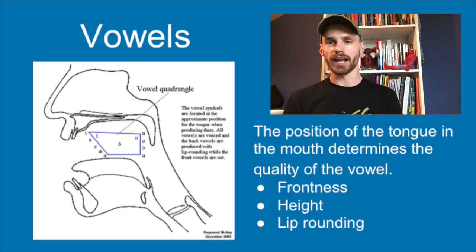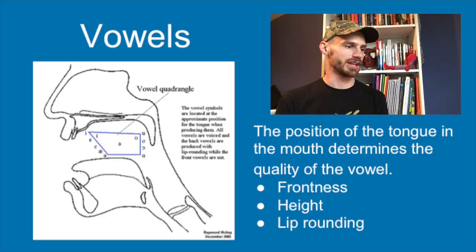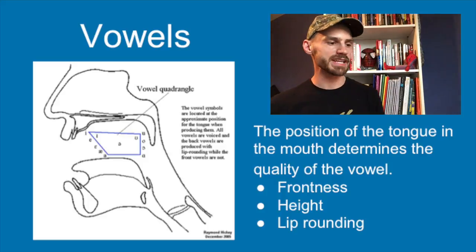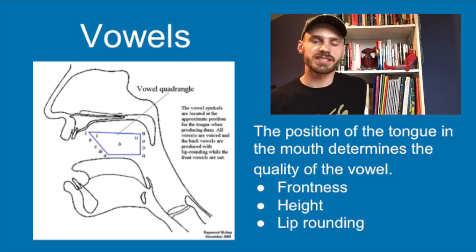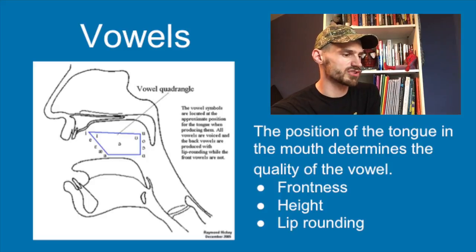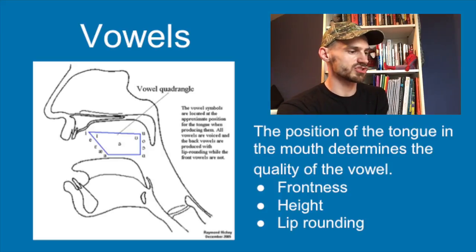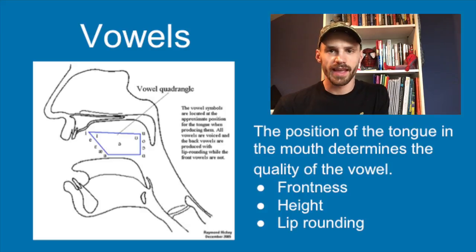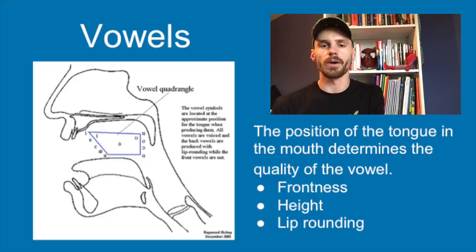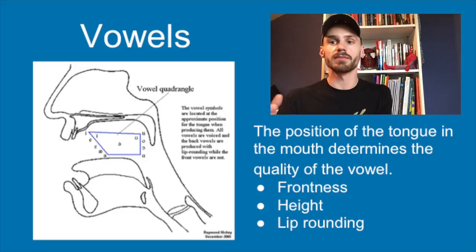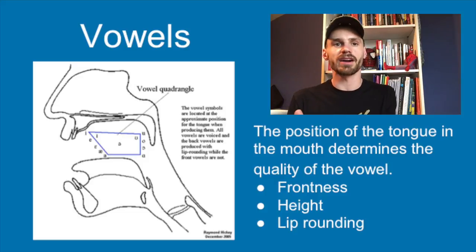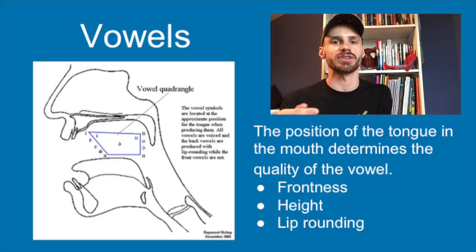We've mainly been talking about consonants so far. Now I want to talk about vowels. Vowels can also be described using just three criteria: frontness, height, and lip rounding. In this sagittal view of the mouth, there's a quadrilateral in the middle of the mouth that corresponds to the position of the tongue when producing vowels. With consonants you have some obstruction or constriction to the airflow, but with vowels they're much more open and free — it's only a matter of where your tongue is located in your mouth that shapes the sound.